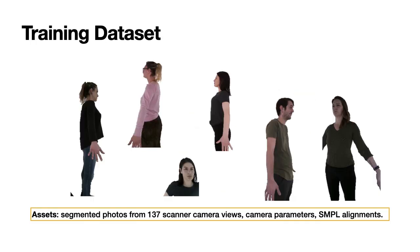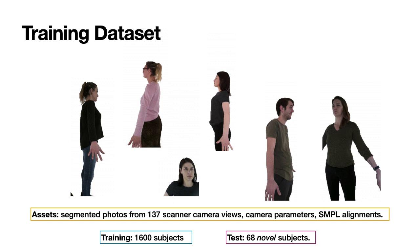To train our model, we currently require segmented photos taken from multiple views along with the ground truth camera parameters, as well as the reconstructed simple alignments from a scanner. We train it on 1600 trained subjects of diverse age, ethnicity, and body shape, and test on 68 held-out novel subjects.